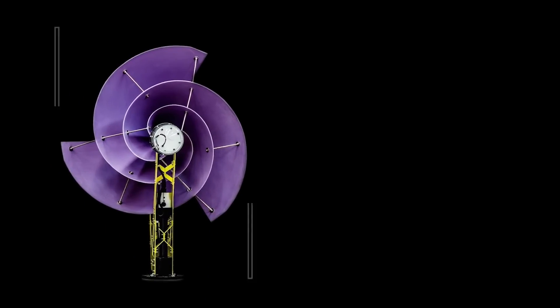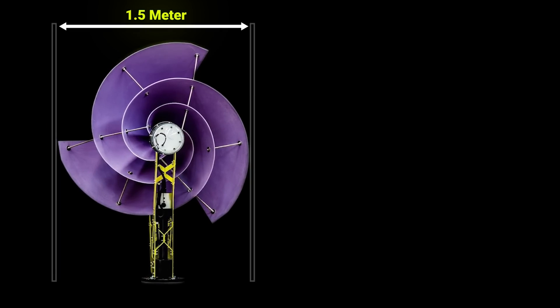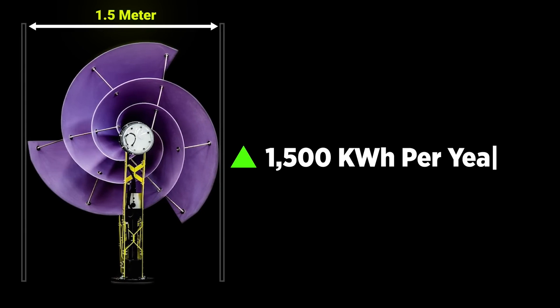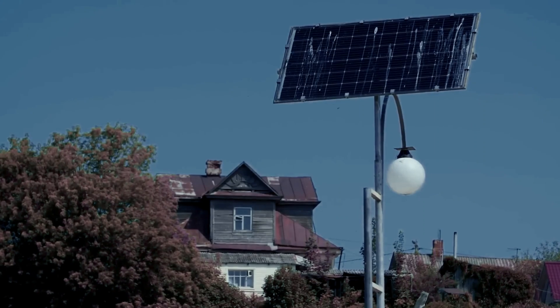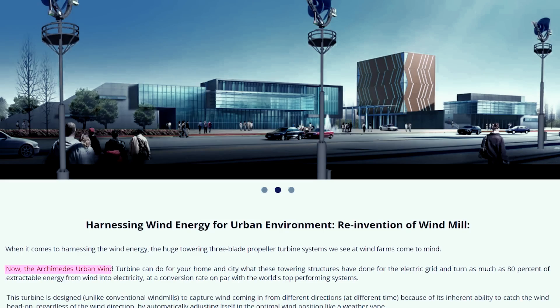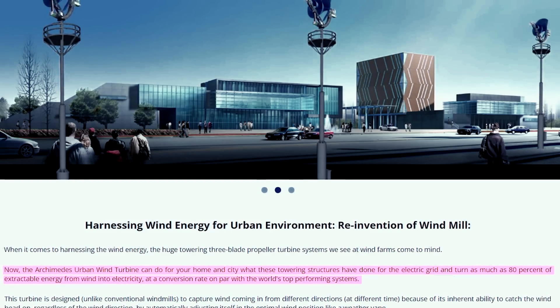High Efficiency. The Liam F1 wind turbine is a powerhouse, achieving upwards of 1,500 kWh per year with a mere wind speed of 5 meters per second. This efficiency surpasses traditional solar panels, making it a potent and sustainable energy source for urban environments.